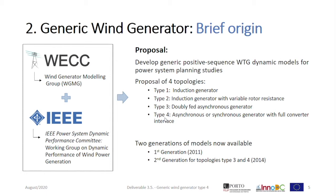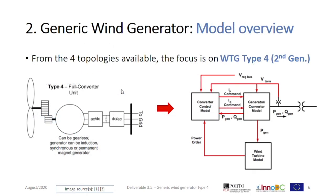There is a second generation of the last two topologies, Type 3 and Type 4, which have come from further improvements. Note that this presentation does not cover all topologies in detail — please check the references at the end for further information. From all the topologies mentioned, I will focus on Type 4, second generation. Firstly, because of its interest for my research: the connection of full converters to the grid to assess the impact on protection in wide area. Secondly, the second generation has improvements such as time constants that were previously hard-coded and can now be parameterized by the user, and also the model can be used without the wind turbine model.